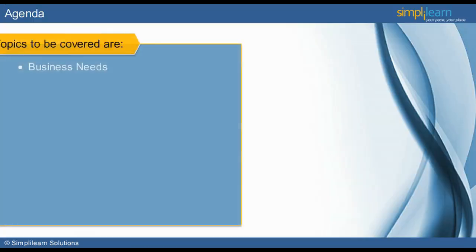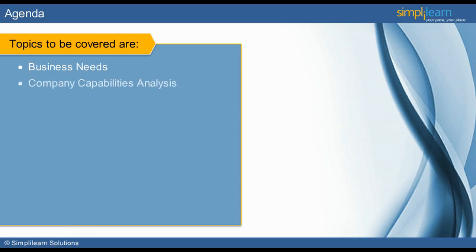We will start this module by establishing the business needs gathered through the elicitation process. Once the needs have been identified, the company capabilities, in terms of assets and knowledge, are assessed. At this point, any needs for outsourcing requirements are identified.